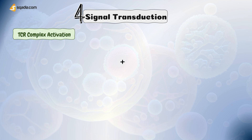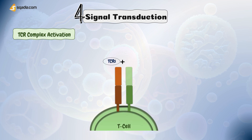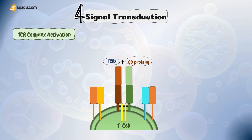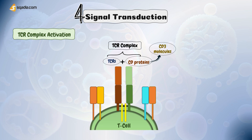Starting with the first step: TCR complex activation. TCRs are mainly involved in detection of the antigen-MHC complex, along with co-stimulatory receptors. They work in close association with other CD molecules, making a TCR complex. This complex is made of TCRs and the associated CD3 molecules. TCR recognition of the antigen-MHC complex triggers the activation of these associated signaling molecules as well.